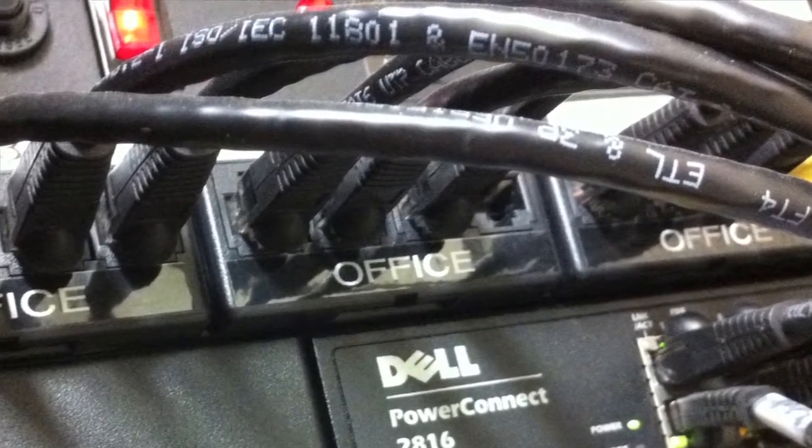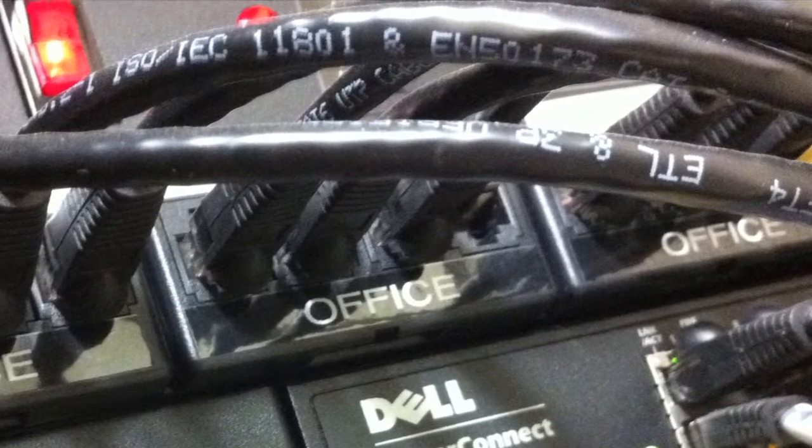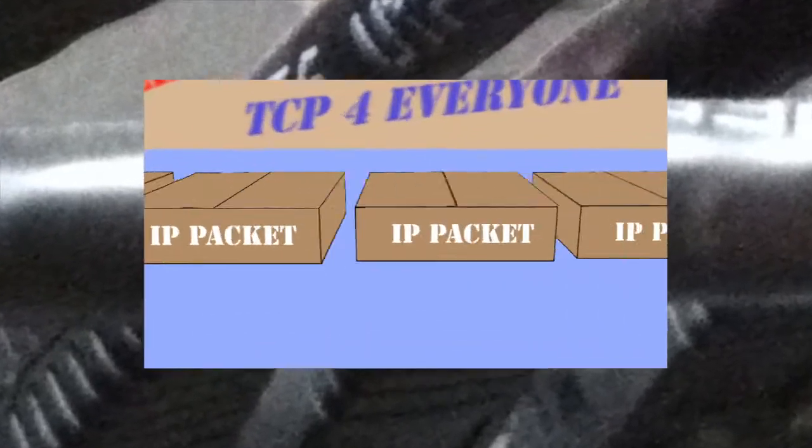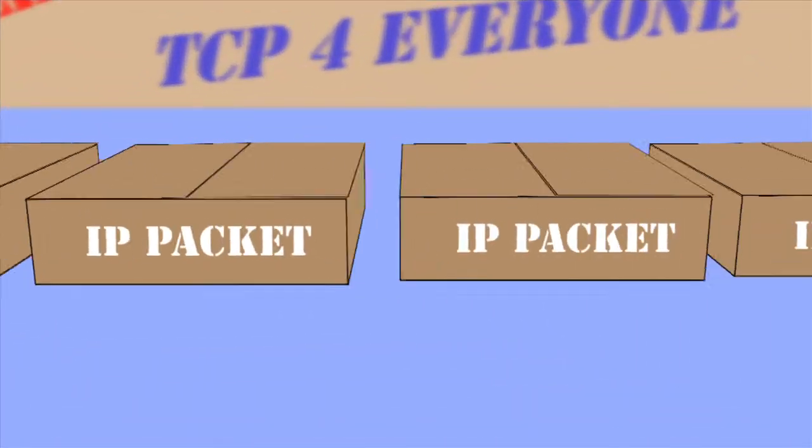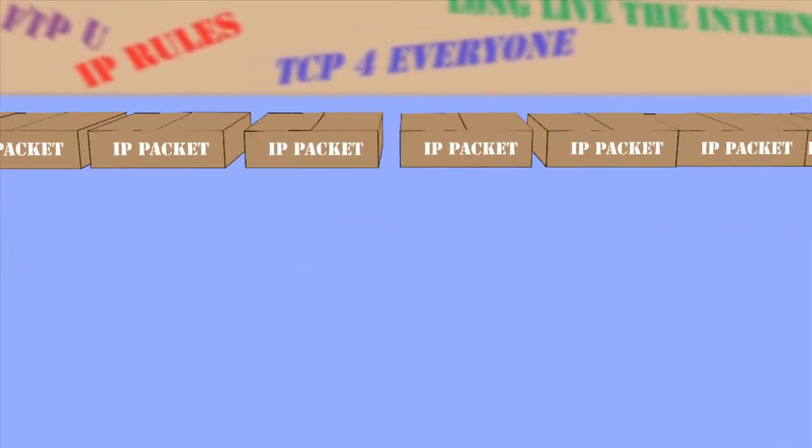If we look inside one of these data cables, we would see the actual packets in the forms of ones and zeros traveling along the wire, just like this. And if we were to stop one of these IP packets and look inside it, we would find the components that make up the packet.